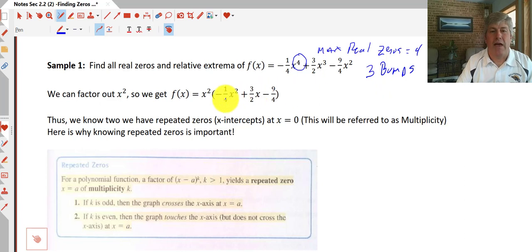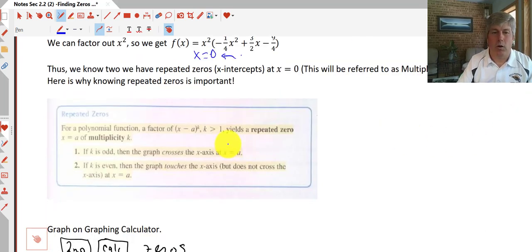First thing we want to do with this one is factor out x squared. So we factor out x squared and right away we know we have a double root at x equals zero, or we have two of our roots are at x equals zero. So now there's only two left. So as we say here, thus we know we have two repeated zeros at x equals zero, we call this multiplicity. And multiplicity is important.